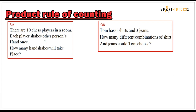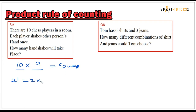Question number seven: There are ten chess players in a room; each player shakes every other person's hand once. How many handshakes will take place? One handshake involves two players, so the first player is chosen from ten, the second from nine: ten times nine is 90 ways. There are duplicates, so divide by two factorial — which is two — giving 45 handshakes.